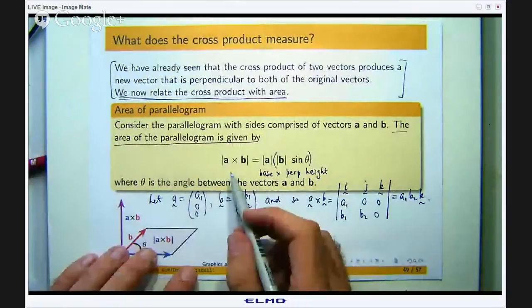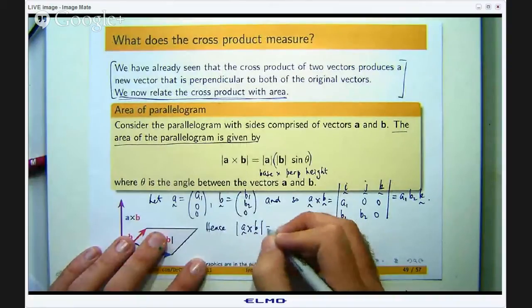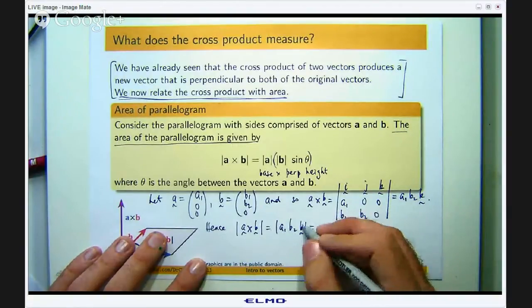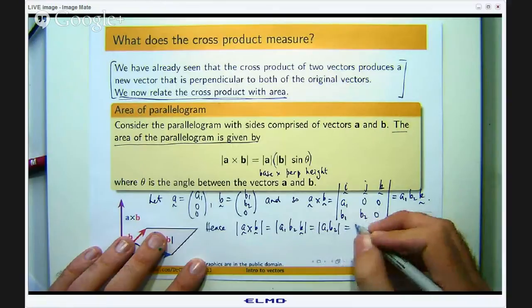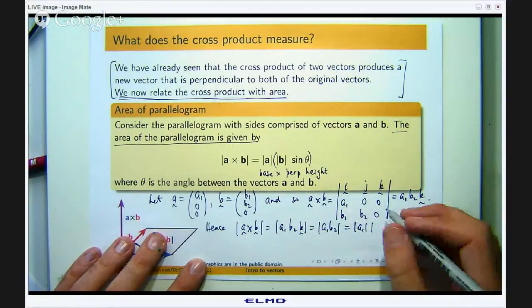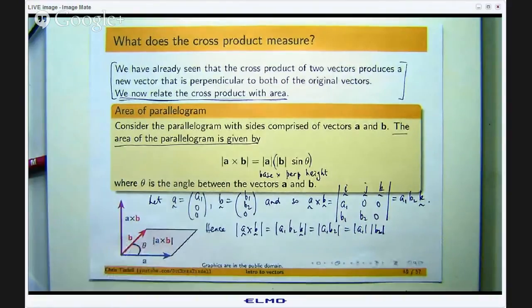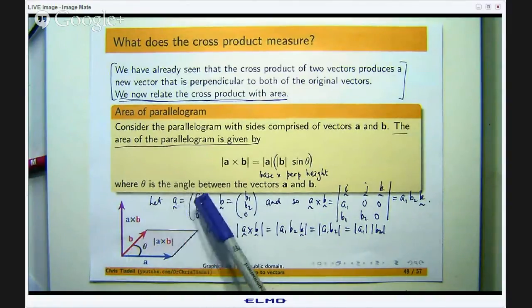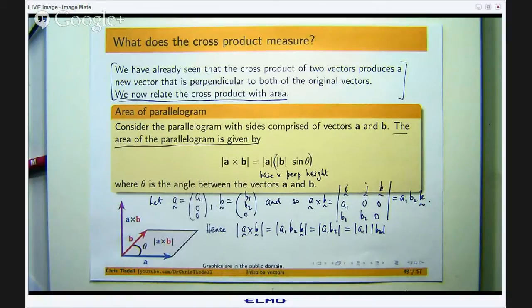So let us take the length of that and we will see what we have. Okay so k has length 1 and it is just the following which is just this. Okay so the absolute a1 times absolute b2. Okay now first of all let us look at this. The vector a in this setting has that component and if I take the absolute value of that, then that is the length of a. Okay so that is the length of the vector a.